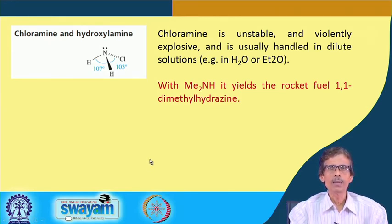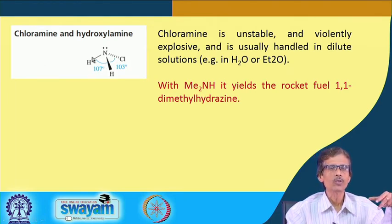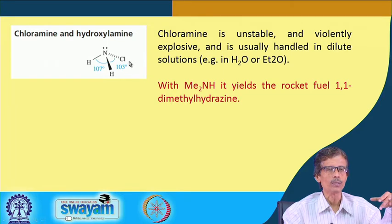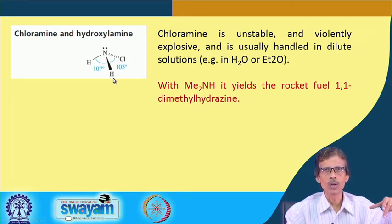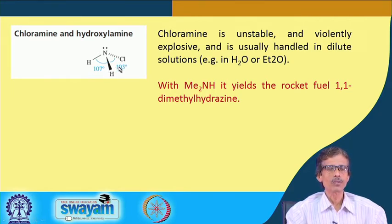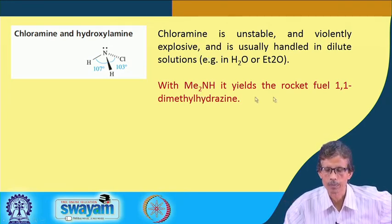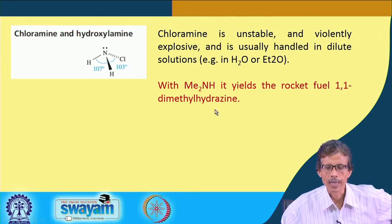We continue to our next class topic: the formation of chloramine and hydroxylamine. Chloramine is the compound where ammonia — which is a pyramidal molecule — has one of the N-H bonds replaced by an N-Cl bond, as we saw in the previous class. The resulting compound has an N-H bond of 107 degrees in pure ammonia, but when one H is substituted by Cl, the Cl-N-H bond angle is slightly smaller at 103 degrees.